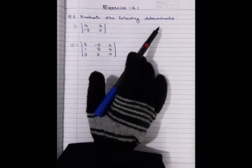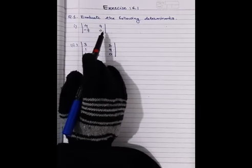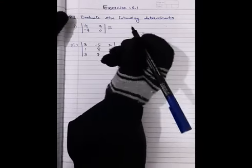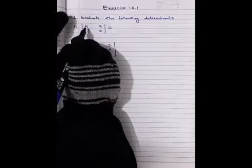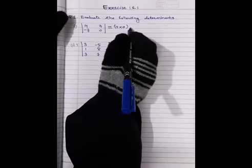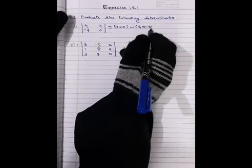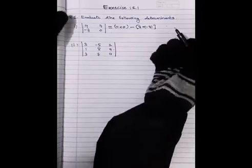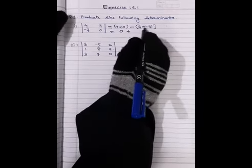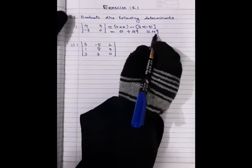Evaluate the following determinants. Number 1: determinant with elements 4, 7, -7, 0. It is a 2×2 determinant. We expand by cross multiplication: 4×0 minus 7×(-7). Simplifying: 4×0 is 0, and minus times minus becomes plus, so 7×7 is 49. Therefore 0 plus 49 equals 49. The answer of this determinant is 49.